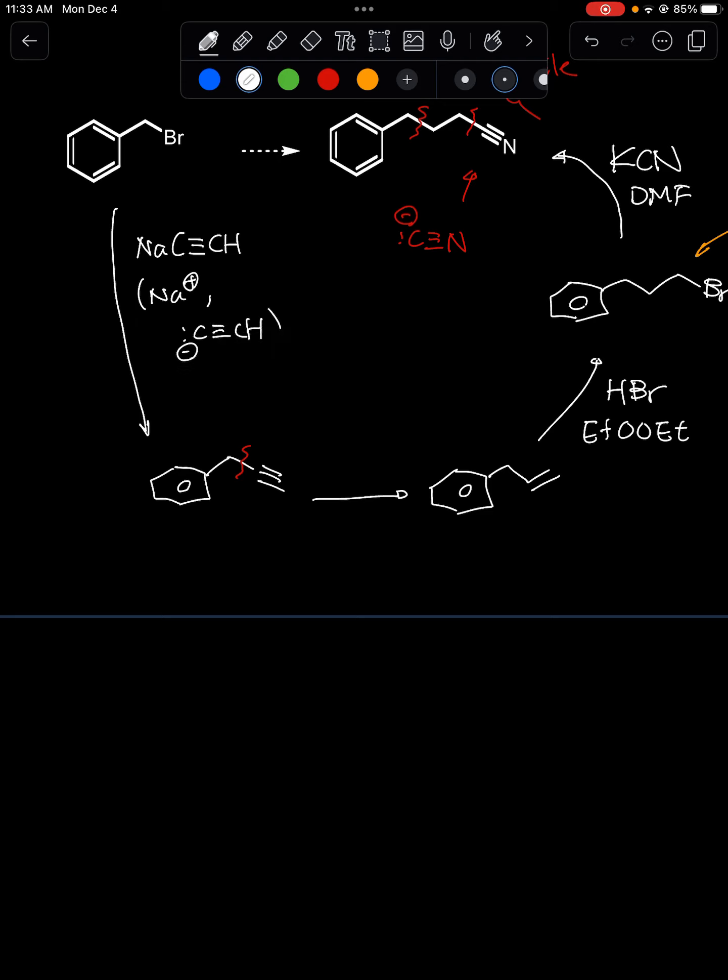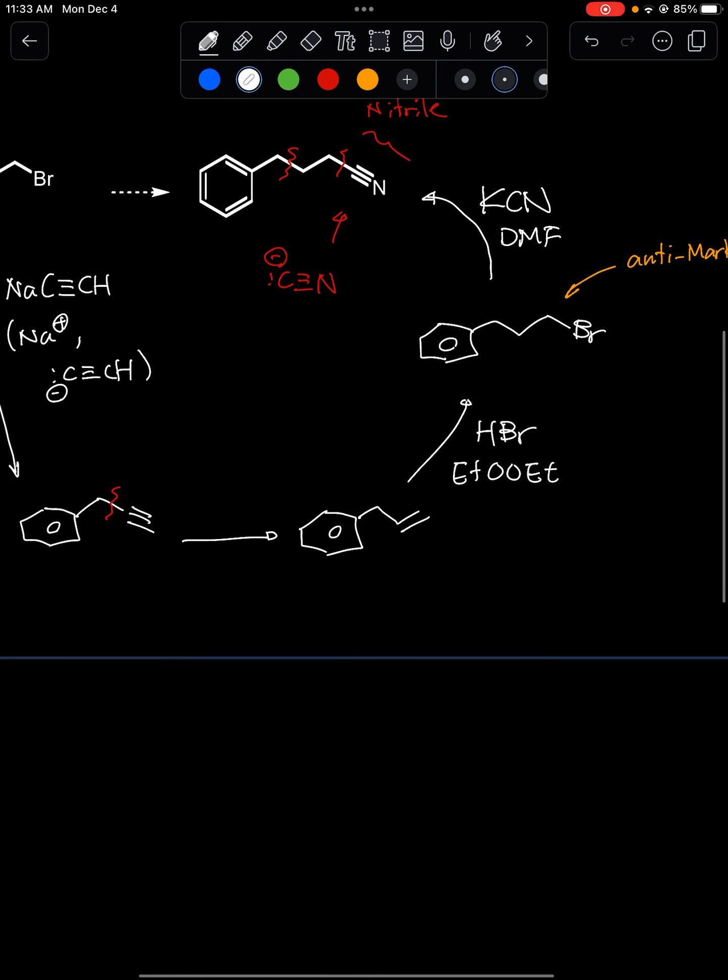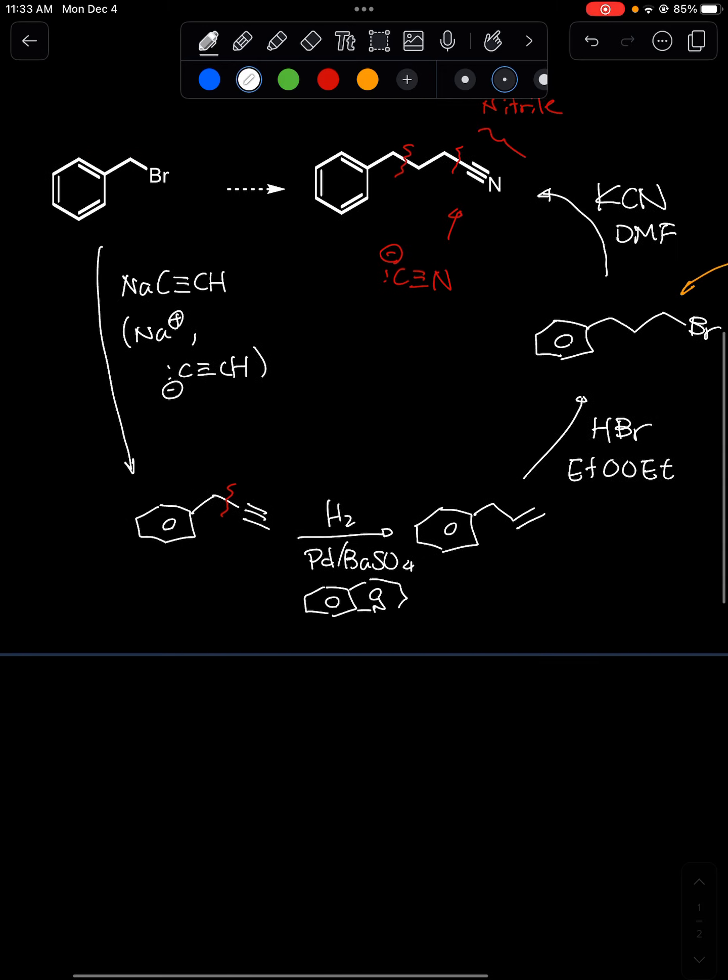Remember this sodium of course would be spectator ion and then you would have alkynide anion through SN2 reaction. Now the only question is how to reduce that alkyne to the alkene. You could do one of two ways because here the trans and cis does not matter because the terminal alkyne carbon has two hydrogens. You could do sodium in ammonia and that would work or you could do a hydrogenation with poisoned catalyst like Lindler's catalyst. So that's it.